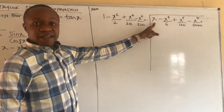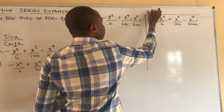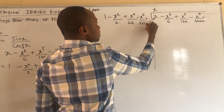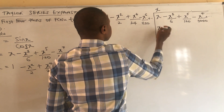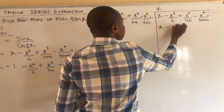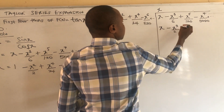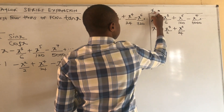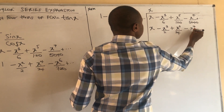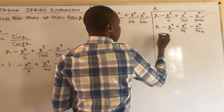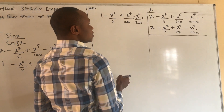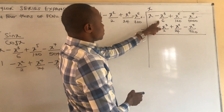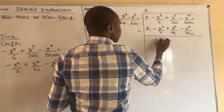We use 1 to divide x, which gives x as the first quotient term. We multiply x by each term of the divisor: x × 1 = x, x × (−x²/2) = −x³/2, x × (x⁴/24) = +x⁵/24, x × (−x⁶/720) = −x⁷/720. Subtracting, the x terms eliminate to give zero, and working out the remainder gives (1/3)x³.